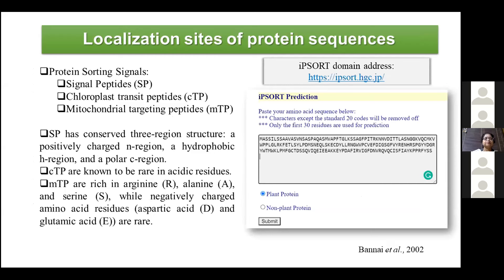For protein sorting signals in IP-sort, the N-terminal sorting proteins are used: signal peptides have a conserved three-region structure — a positively charged N-region, a hydrophobic H-region, and a polar C-region. Chloroplast transit peptides are known to be rare in acidic residues, and mitochondrial targeting peptides are rich in arginine, alanine, and serine, while negatively charged amino acids like aspartic acid and glutamic acid are rare. Once you type the IP-sort website address on your browser, go to the IP-sort prediction page, paste your sequences in the gray area, specify if it is a plant protein or non-plant protein, then hit the submit button.